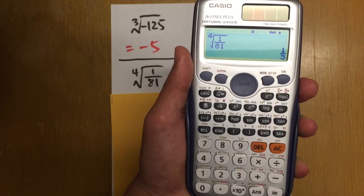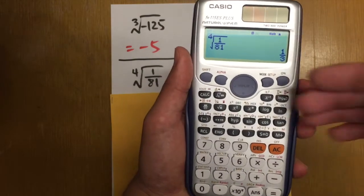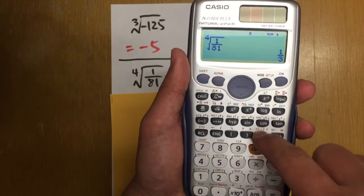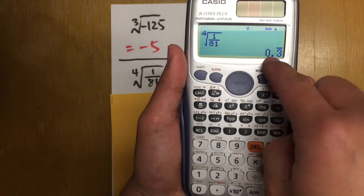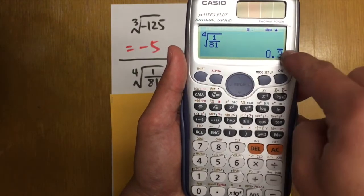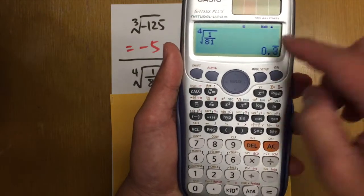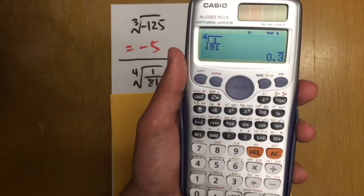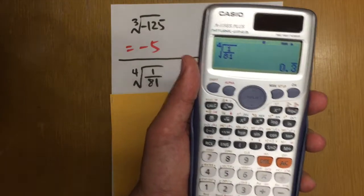And we have our answer 1 third. In case, if you want decimal, you just press S2D for the answer. And you see that this is 0.3 with a bar on the top. That means 0.3333333 forever, right? So it also shows you the bar. Really, really cool.